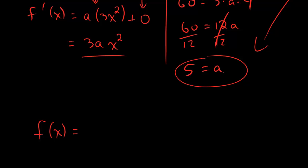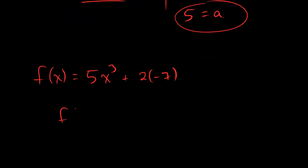The original function was ax cubed and that becomes 5x cubed. And then we had a plus 2b and now that means plus 2 times negative 7. So, we could simplify the whole thing to be 5x cubed minus 14. Not so bad, dudes. I'm leaving now. Bye.